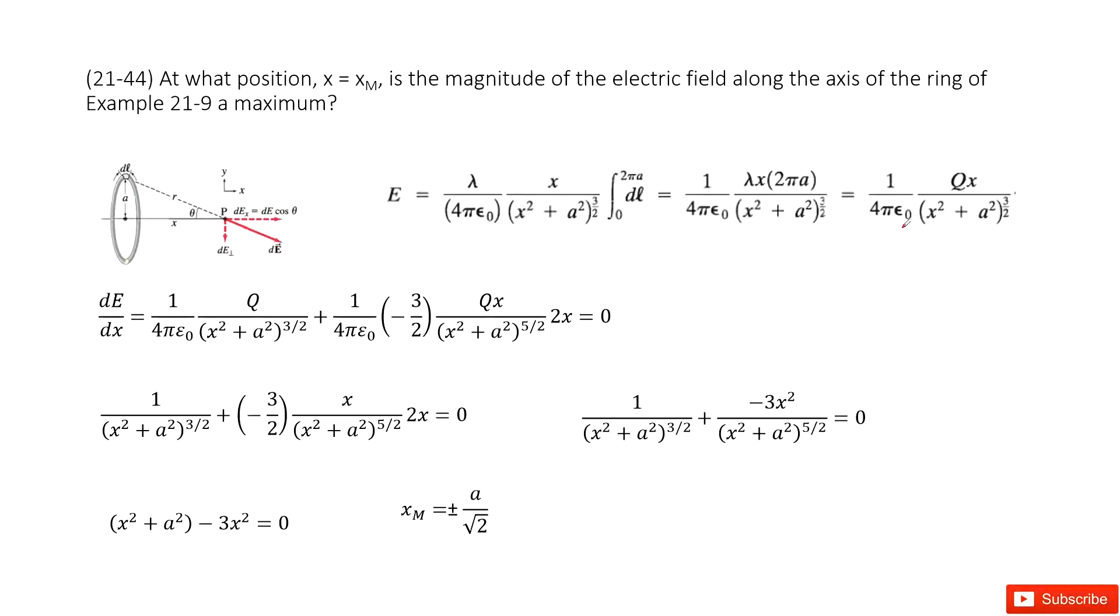And then we need to find this equation. So electric magnitude equals this function. We need to find at which position x can make this value maximum. So very straightforward, we just need to do the derivation dE with dx.